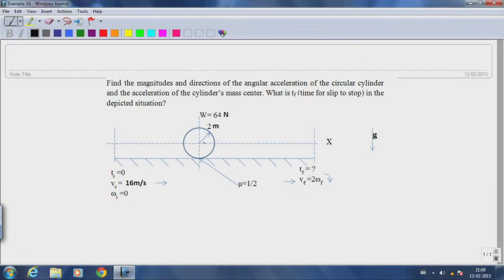We have a circular cylinder that is starting at point A at time instant zero. The linear velocity of this hoop was 16 meters per second and the angular velocity is zero. We are asked to find the time instant at which slipping would stop, so we have to find the time instant at which the hoop would quit slipping.